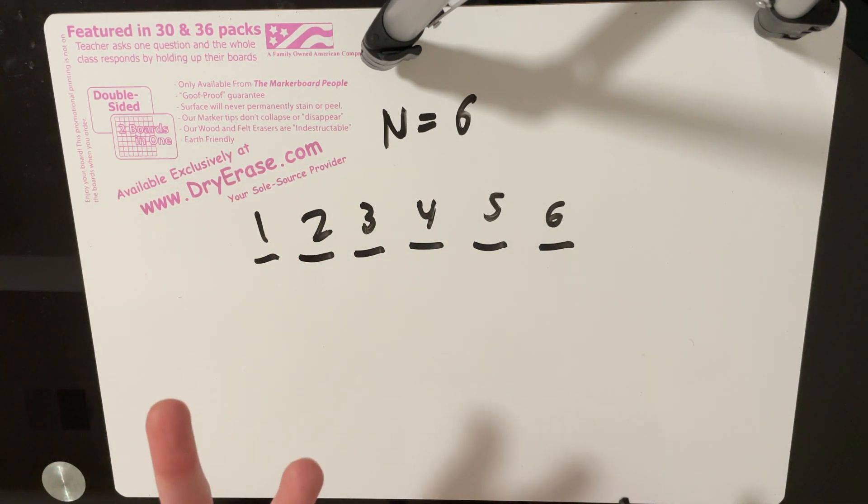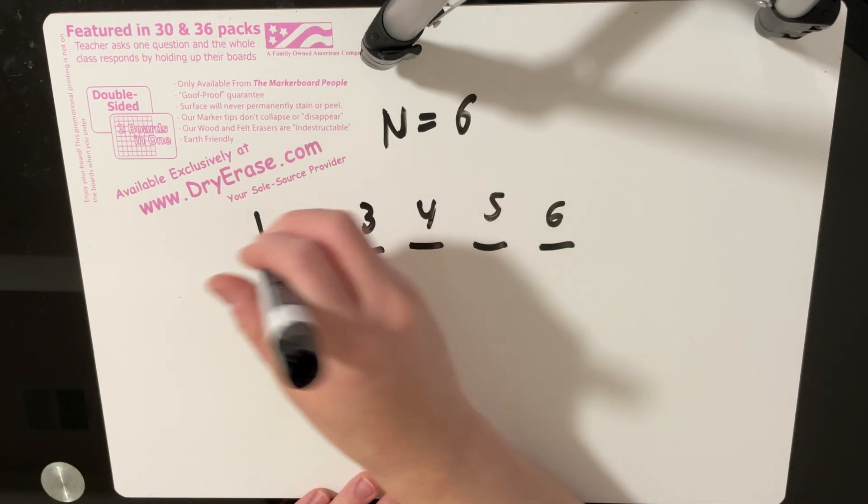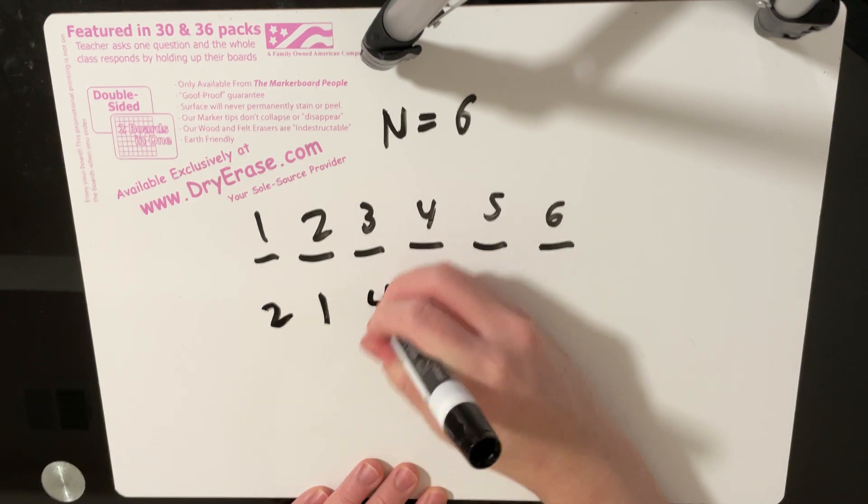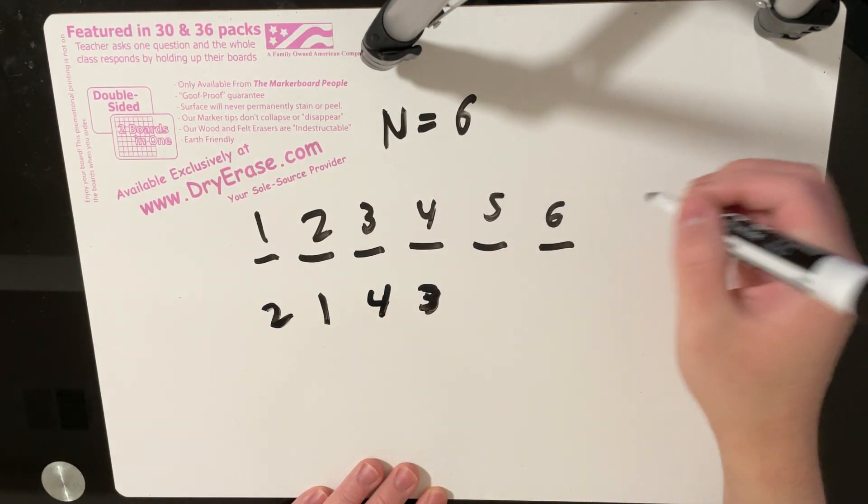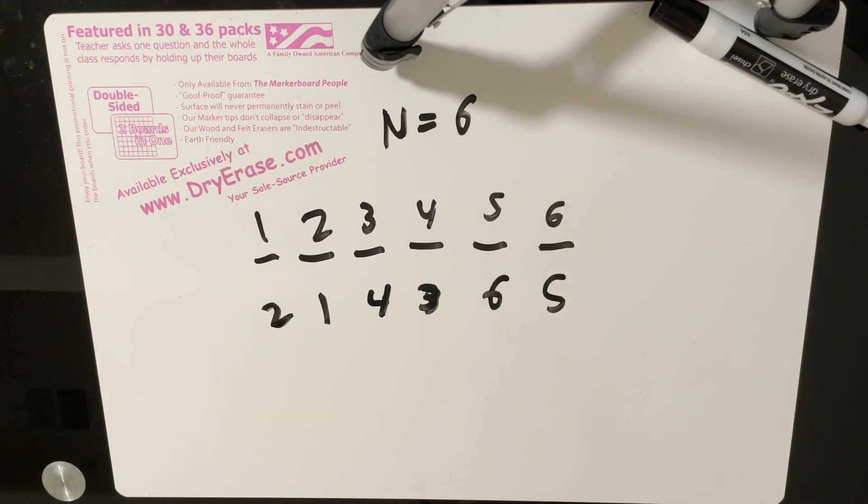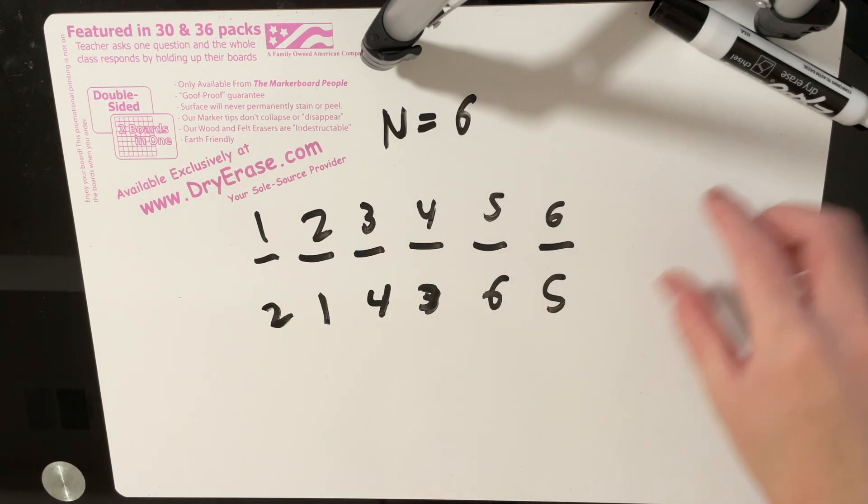And so in this case, we can use 3 swaps to create a valid configuration. All we have to do is we have to swap the 2 and the 1, we swap the 4 and the 3, and then we swap the 6 and the 5. And notice that this is a valid way to swap the elements. And not only that, but this is also the optimal way to rearrange the permutation.